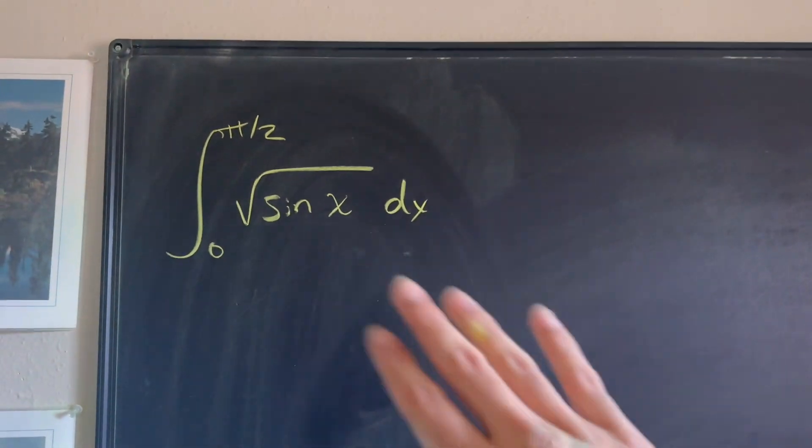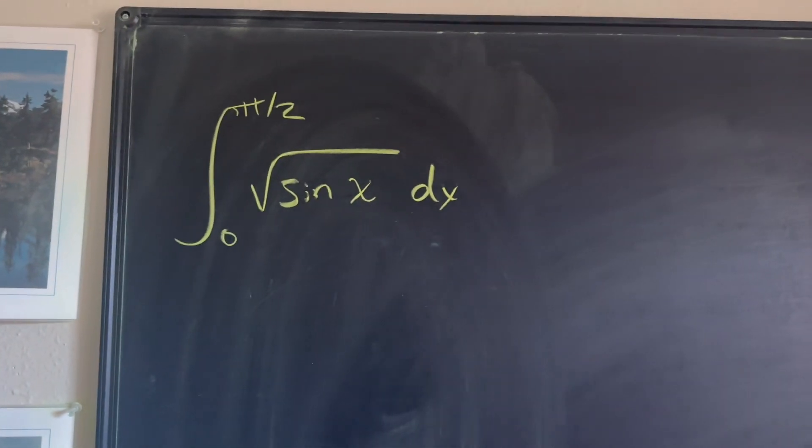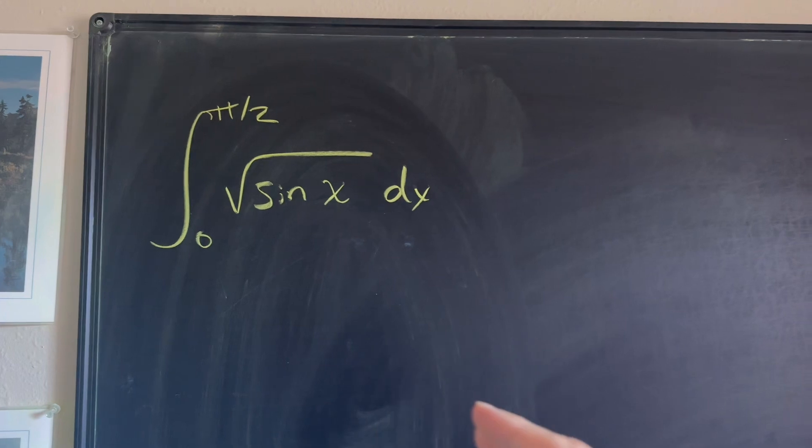In this video, we're going to go ahead and solve this integral: the integral from zero to pi over two of the square root of sine of x with respect to x. It's a gorgeous day here on Saturday, December 17th or 18th — I lose track of my days sometimes. We're going to solve this using a basic u-substitution, and you're going to be fascinated with the generalization that comes out of it.